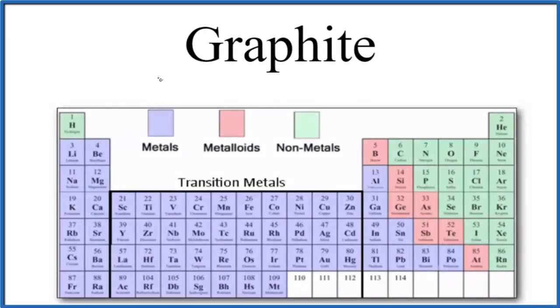In this video, we'll look at whether the chemical bonds in graphite are ionic or covalent bonds.